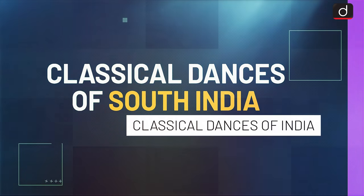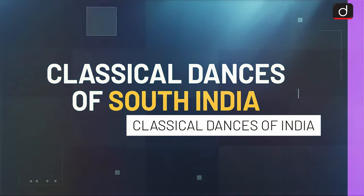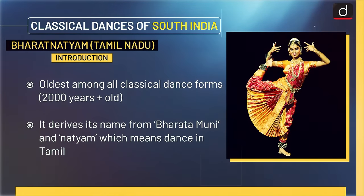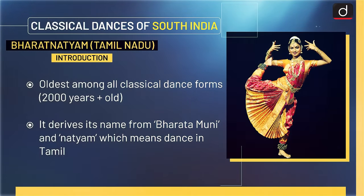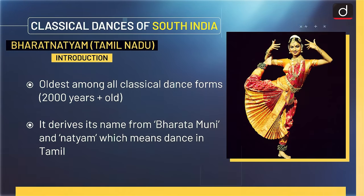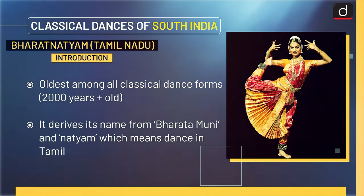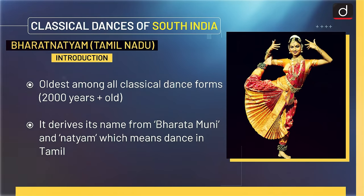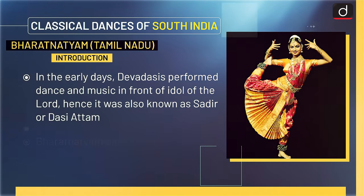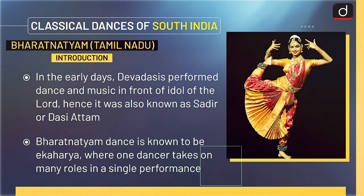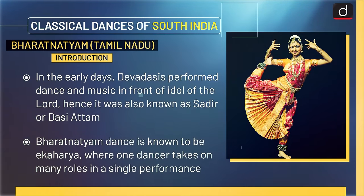Now let's have a look at the classical dances of South India. First, Bharatnatyam from Tamil Nadu. It is the oldest among all classical dance forms, about 2000 years old. It derives its name from Bharat Muni and 'Natyam', which means dance in Tamil. In the early days, Devdasis performed dance and music in front of the idol of the Lord; hence it was also known as Saadir or Dasi Attam. Bharatnatyam is known to be Eka Hariyaa, where one dancer takes on many roles in a single performance.